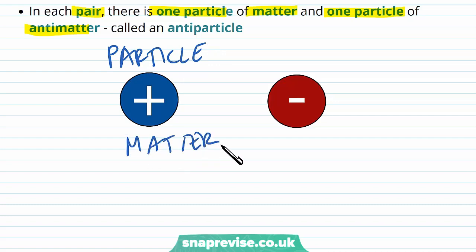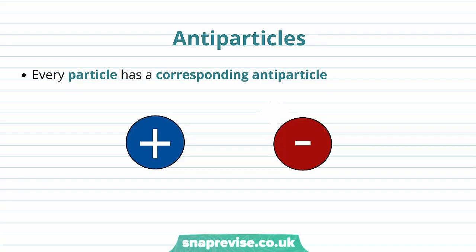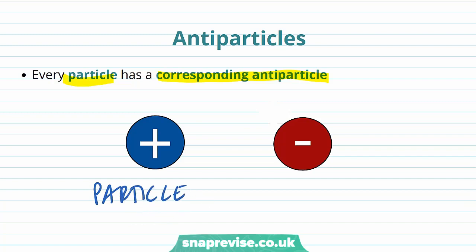In each pair there is one particle of matter and one particle of anti-matter called an anti-particle. Particles make up matter — for example, the sun, a kettle, and a football are all made out of matter. This other particle here is an anti-particle, and this anti-particle is what makes up anti-matter. Everything in the universe that isn't made out of matter is made out of anti-matter.